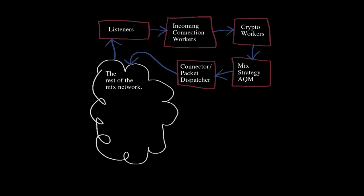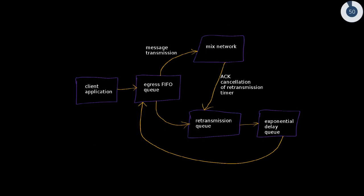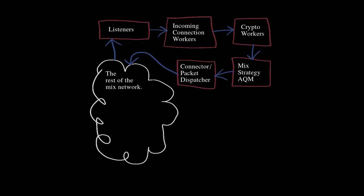Inside each mix, this is sort of more or less what's going on inside the client. But inside each mix in the network, this is what's going on. This cloud is the rest of the mixed network. Messages enter this pipeline. There's a listener, a connection worker, it establishes our noise link layer protocol. Then crypto workers receive Sphinx packets and remove a layer of encryption and then send those packets to a strategy, a mixed strategy queue, where they get queued up. When they get sent out, they get sent out to this dispatcher and it sends them to the correct mix on the mix network, according to its routing information.